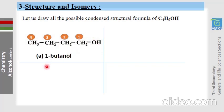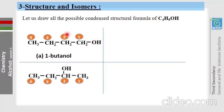To find the next isomer, move the OH group to carbon number 2. The resulting structure is 2-butanol.